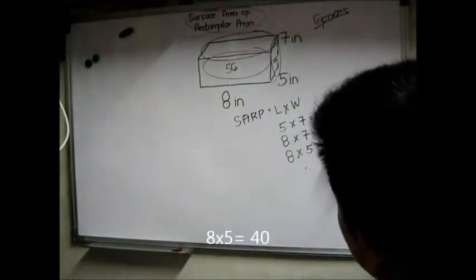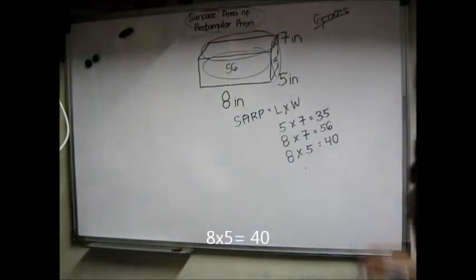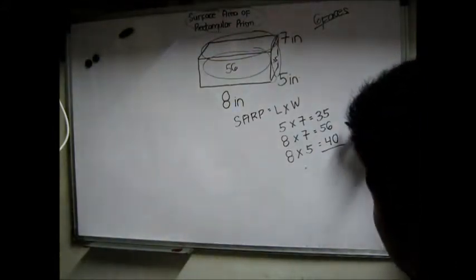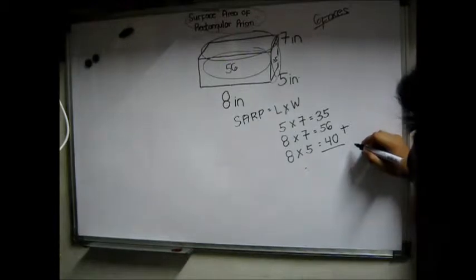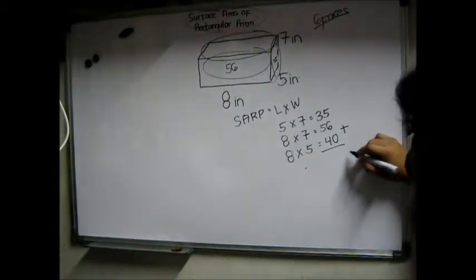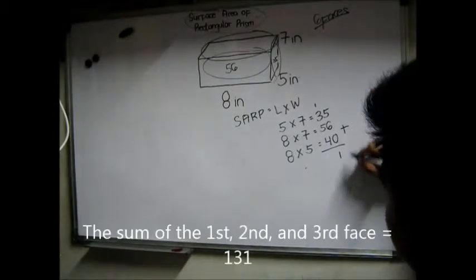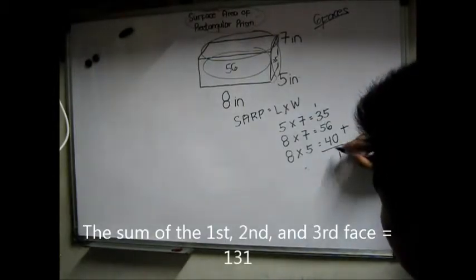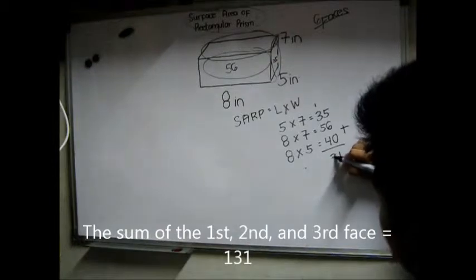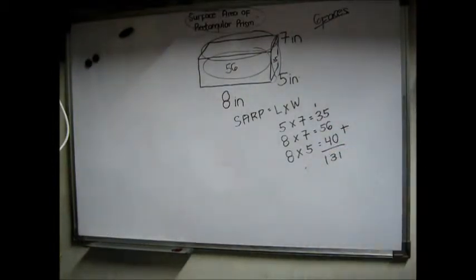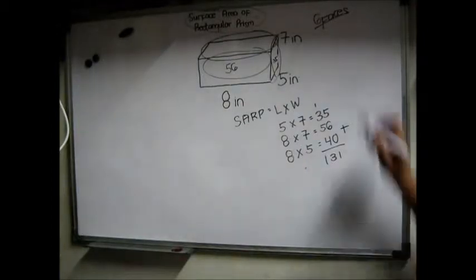Now we are going to add these three. Now 6 plus 5 is 11, carry 1, 8, 9, and 13. So the sum of these three faces is 131, but we are finding 6 faces.